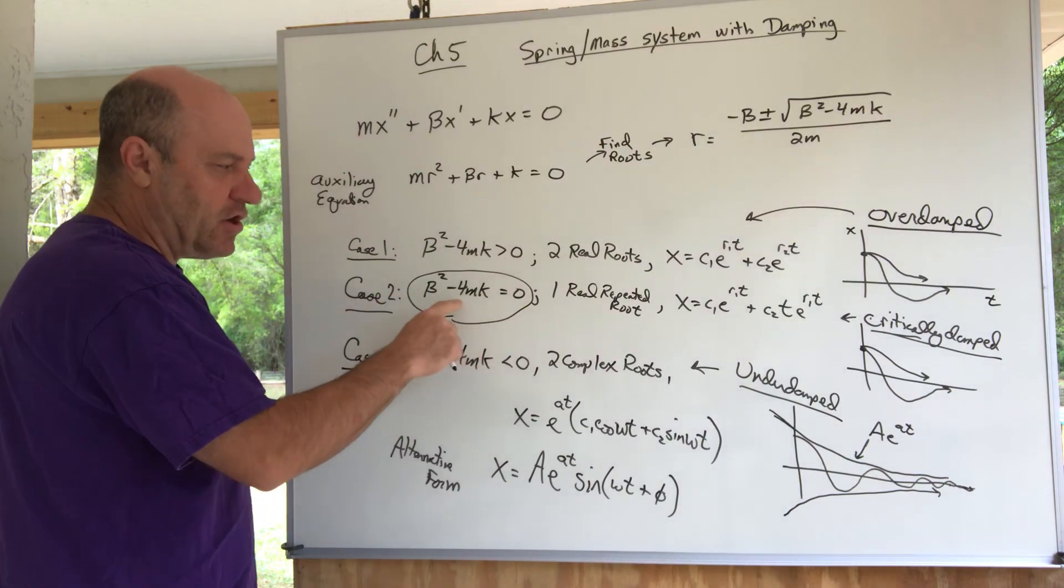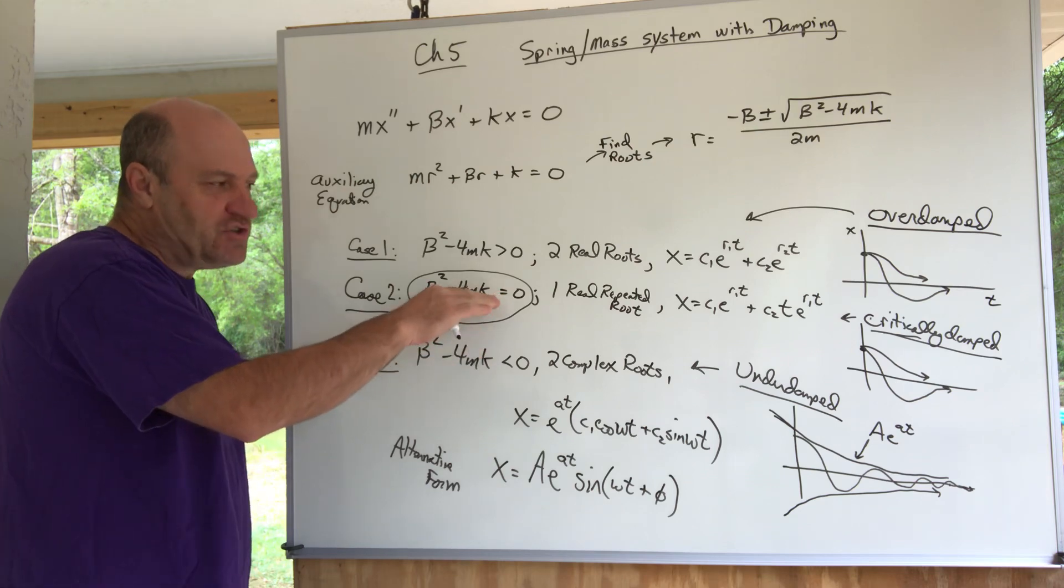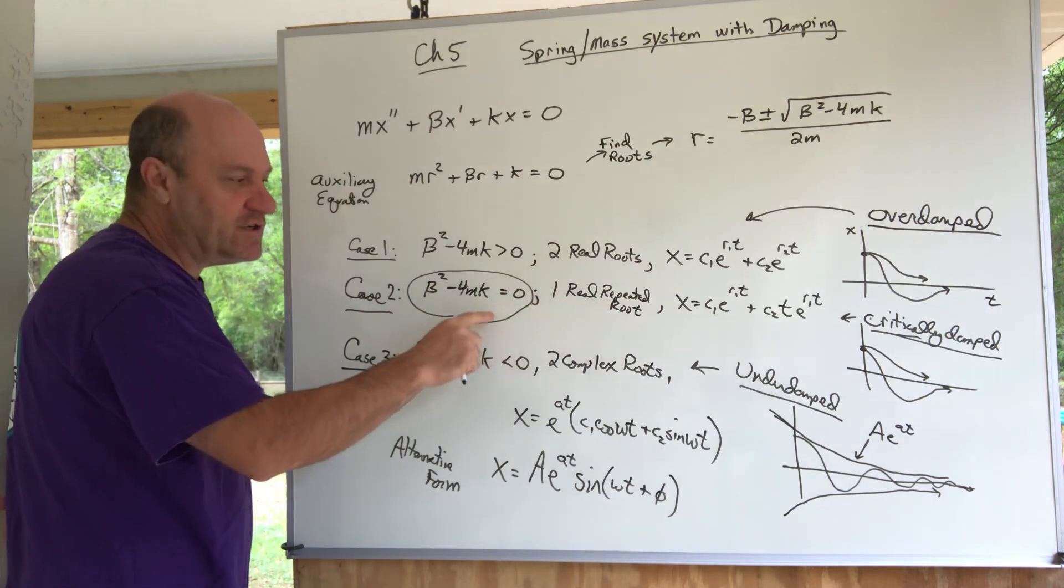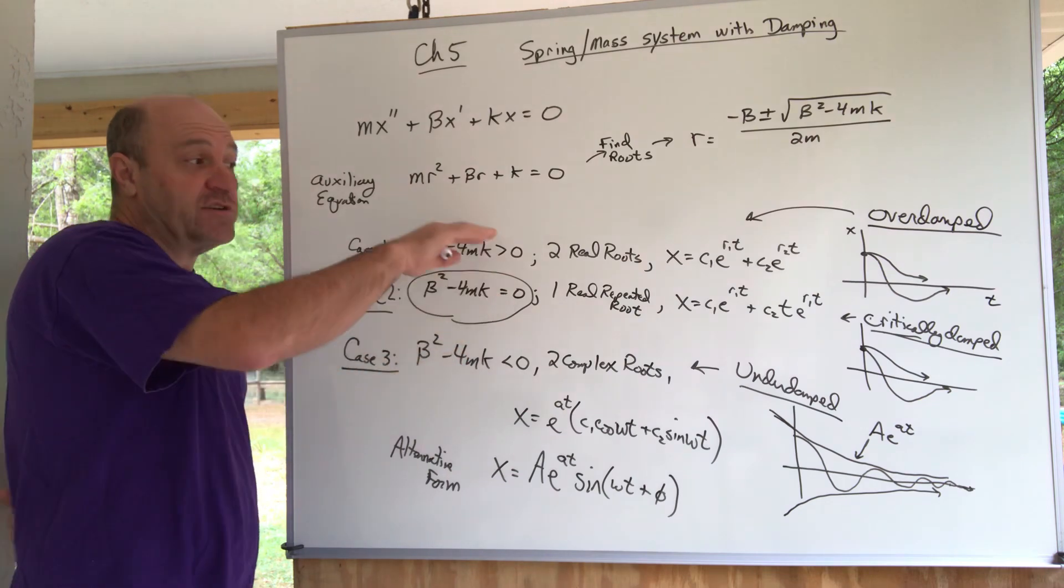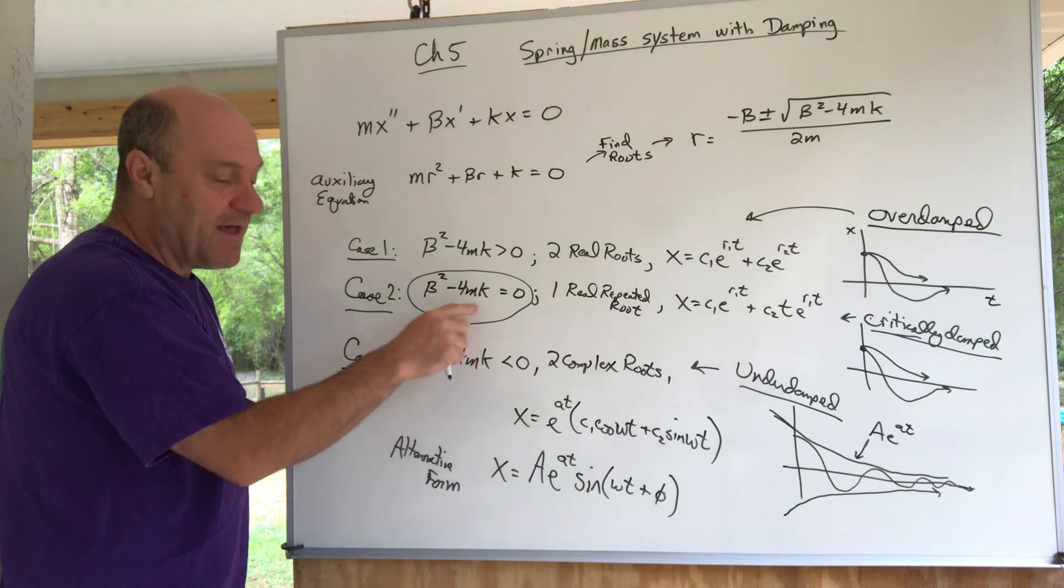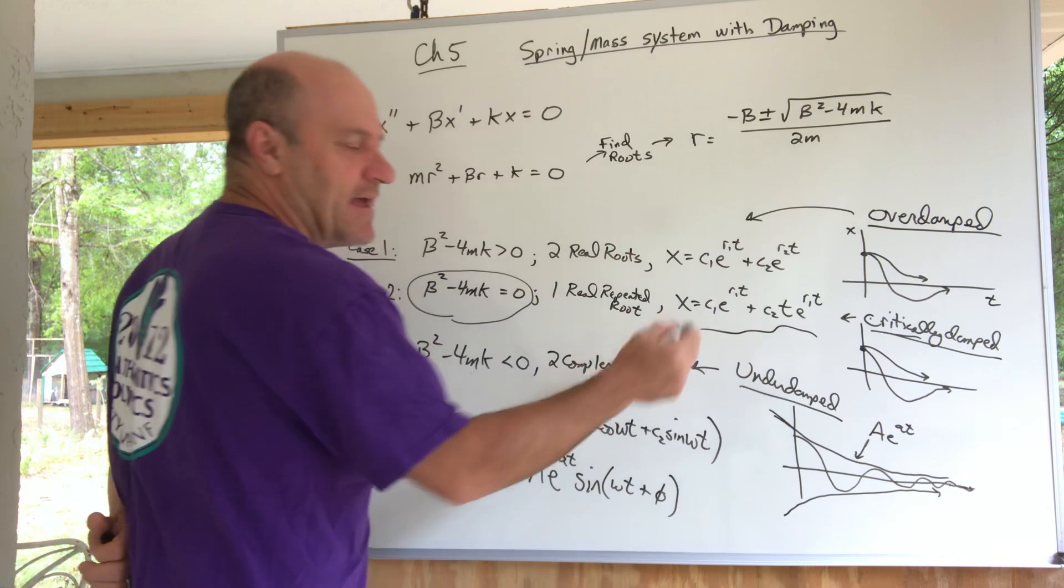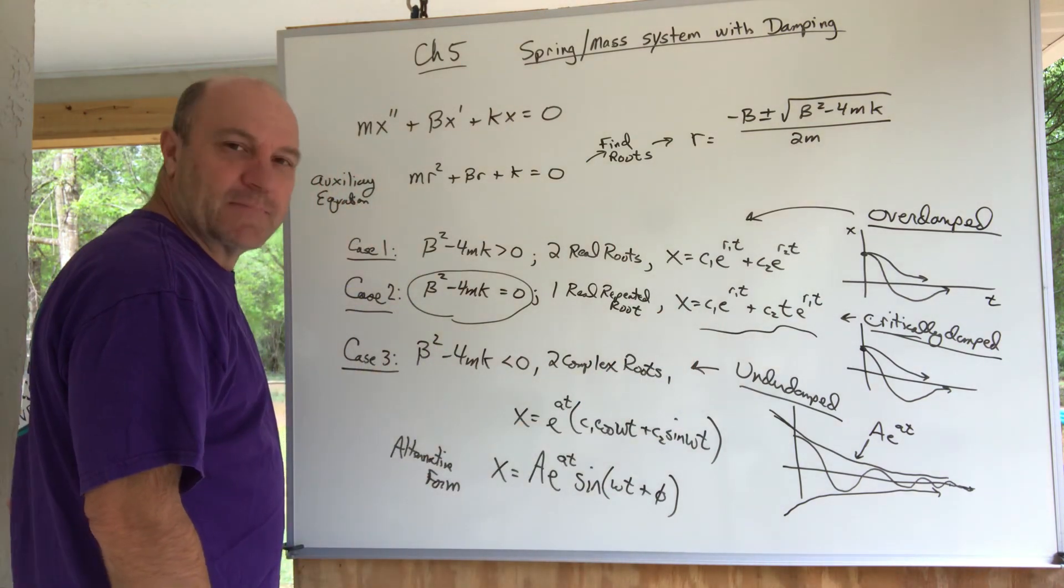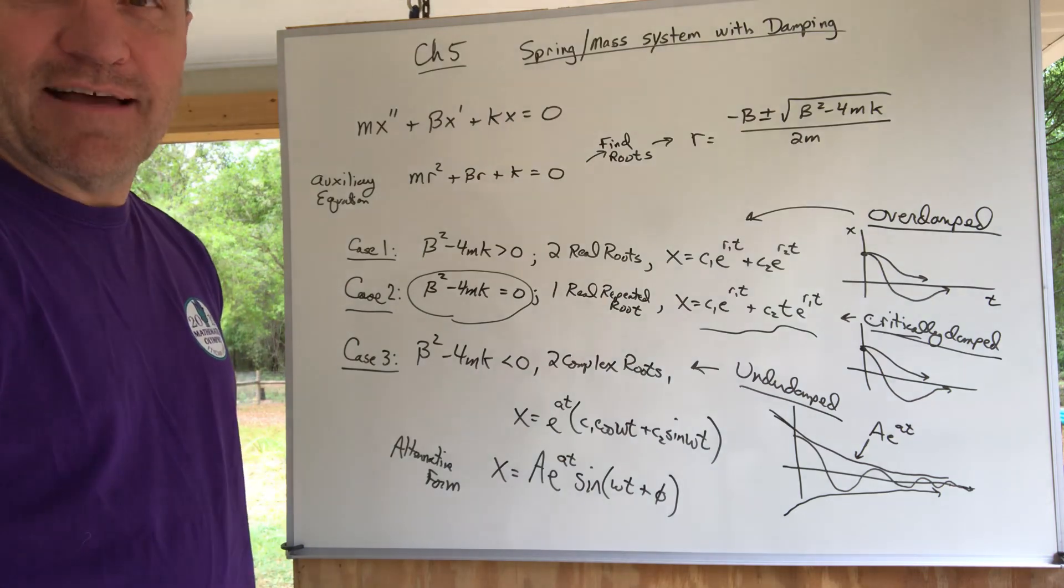A slight adjustment to m or k or beta would put you—it's kind of on the critical edge. A slight adjustment to any of this might make this positive, which is overdamped, or it might make this negative, which is underdamped. So we're kind of on this critical edge. That's why it's critically damped, I think. We should do some problems. Good luck.